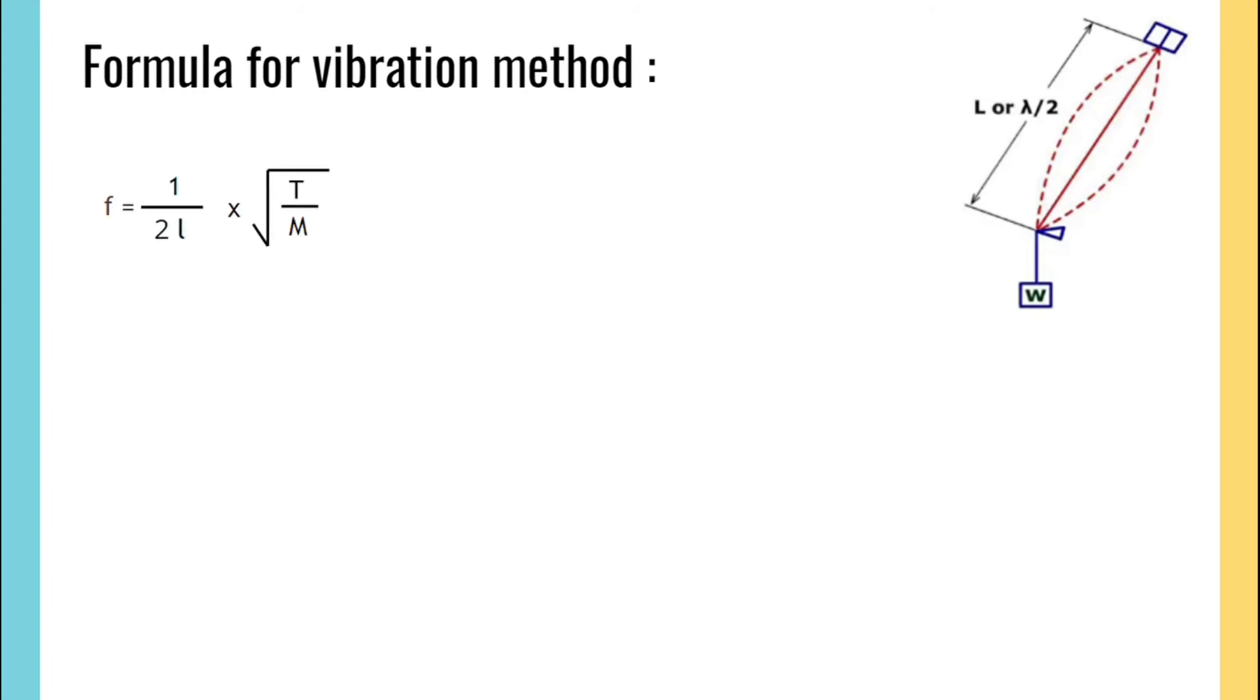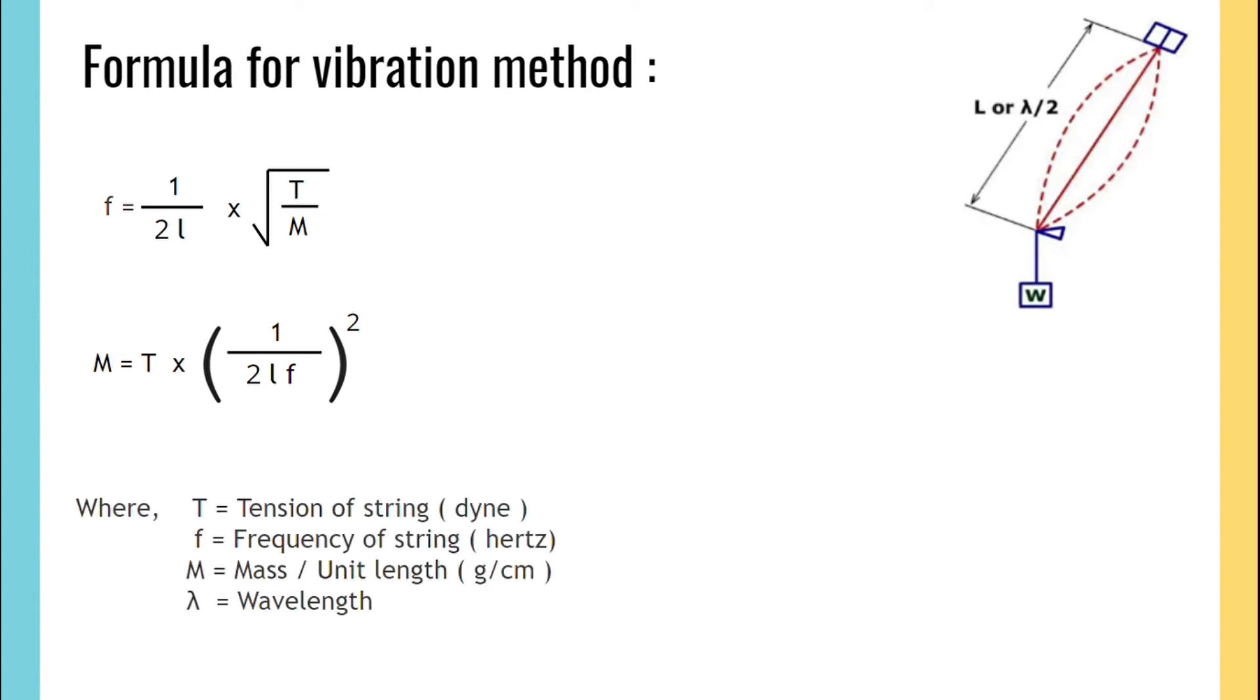Keeping M on one side, the formula becomes M equals to T into (1 by 2Lf) the whole squared. Here, T is tension of string expressed in dyne, f is frequency of string expressed in hertz, M is mass per unit length, that is linear density expressed in gram per centimeter,